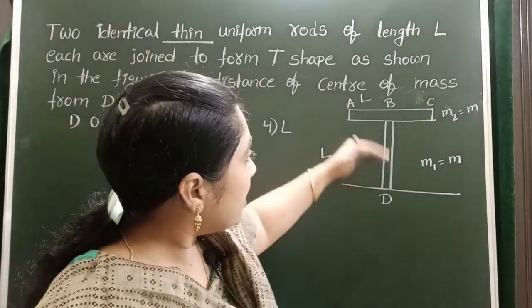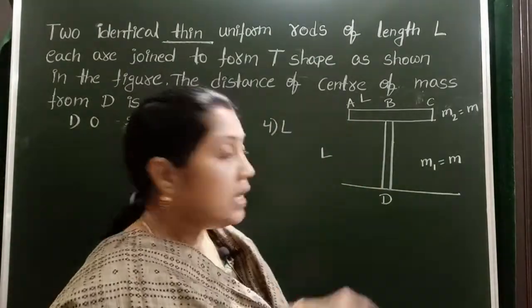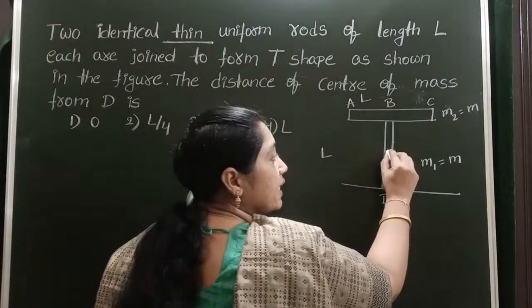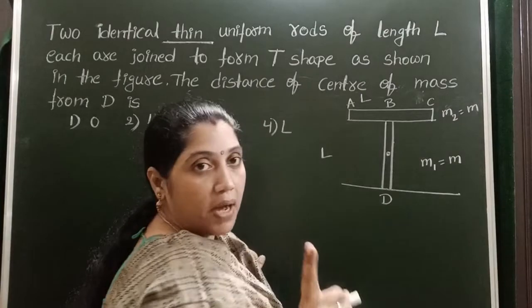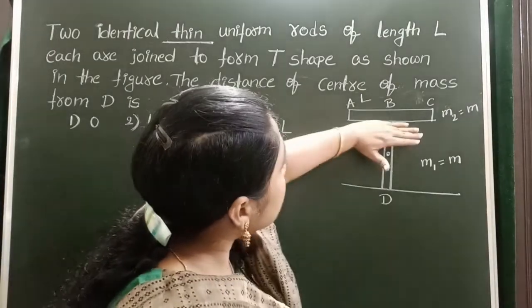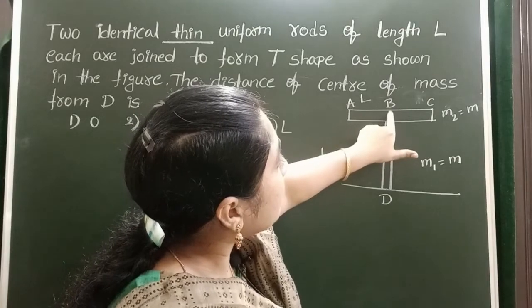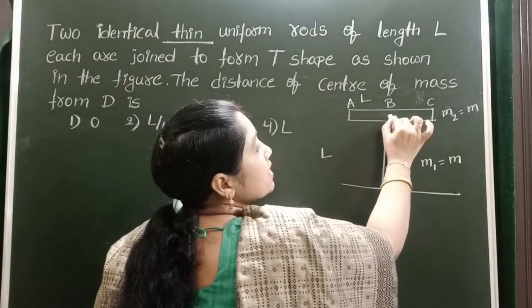Now take these two rods individually. The center of mass of this rod is exactly at the center. This is the position of center of mass of the first rod. And for the second rod, the position of center of mass is exactly at the midpoint.